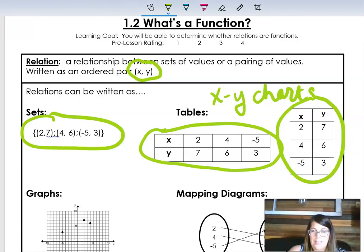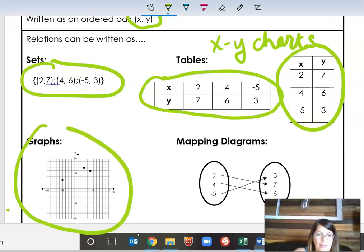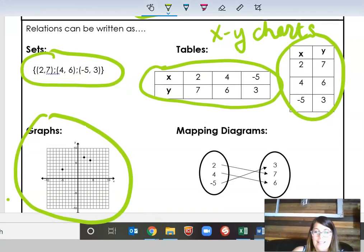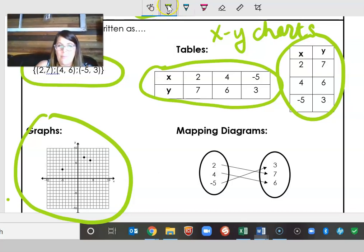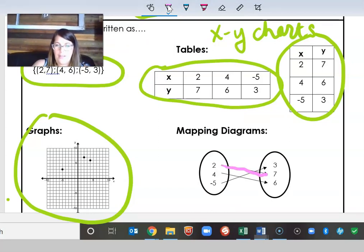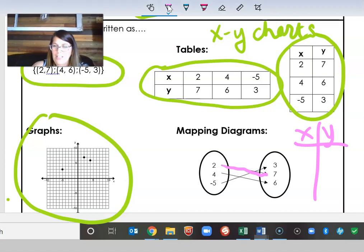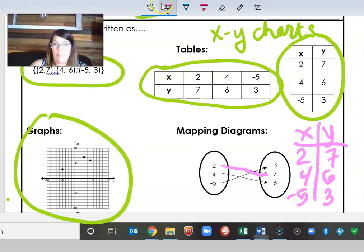2 goes to 7, 4 goes to 6, and negative 5 goes with negative 3. We can also show relations as graphs. And then lastly here is a mapping diagram. So I'm not sure how familiar you are with a mapping diagram. Sometimes I feel like they could be a little bit goofier, a little bit harder to understand. See how you've got this 2 and you've got this line going to the 7? Whenever I have a mapping diagram, I just rewrite it as an x, y chart just so I can be super clear I see it.